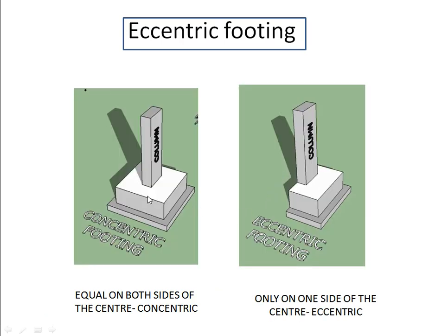This can also be seen in the 3D sketch. The first shows a regular footing with the column and footing extending symmetrically on both sides. In the second sketch, you can see that the footing is eccentric to the column, meaning it is only on one side of the column.